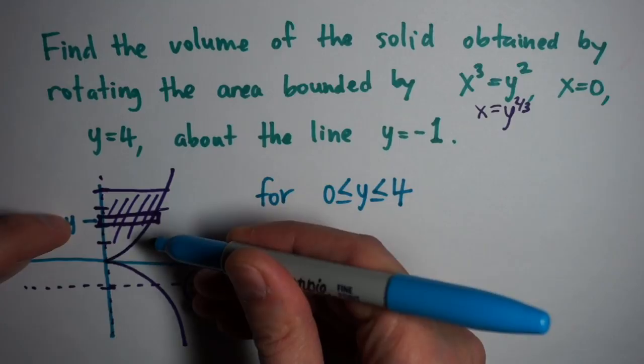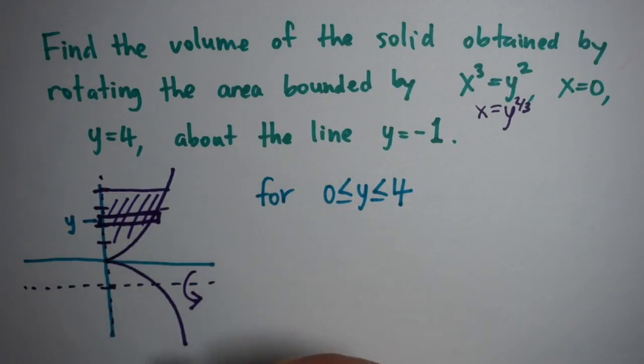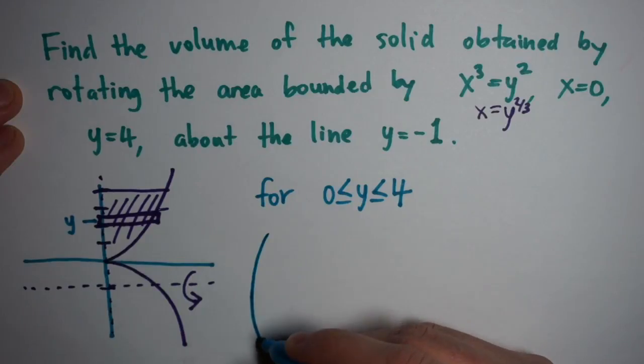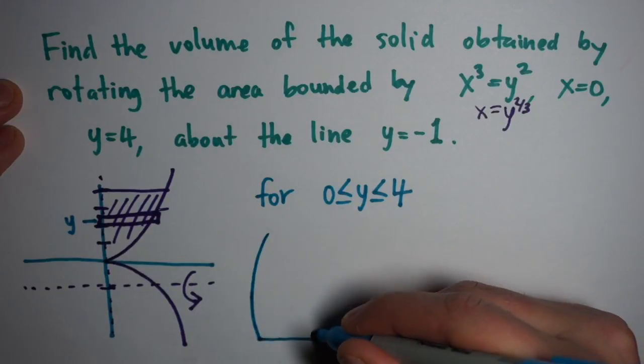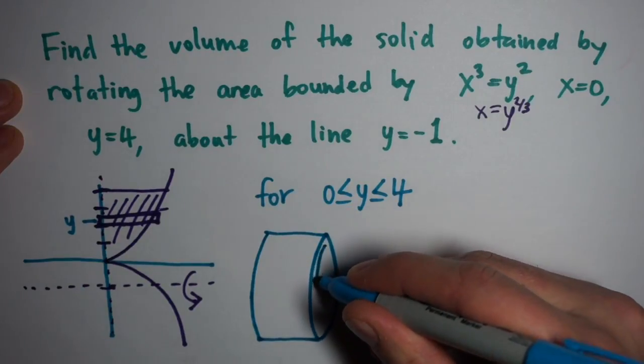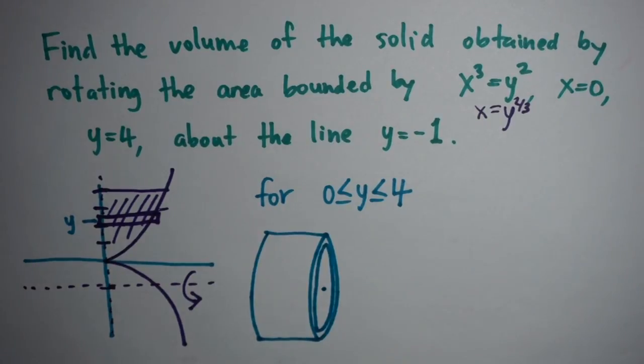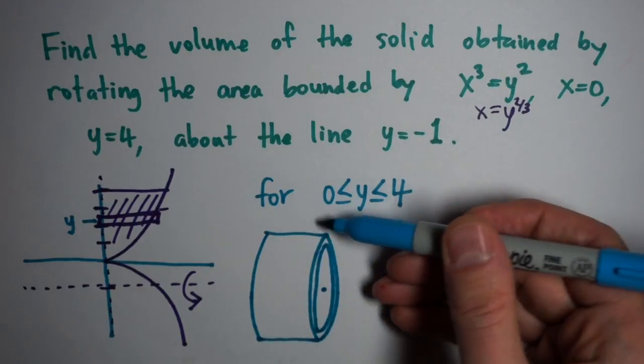When you rotate this around the line x = -1, what we end up with is a shell shape. I'm going to sketch it here—it ends up looking something like this. It is a cylinder with the inside cut out. Now we need the volume of this, so we need to find the dimensions and figure out how this volume actually works.